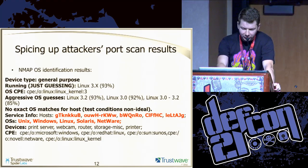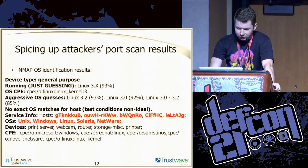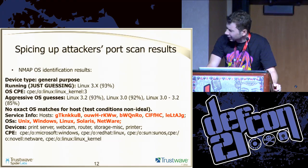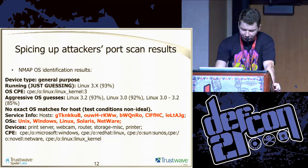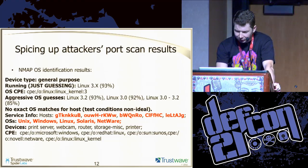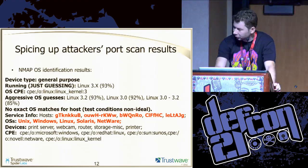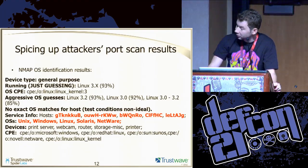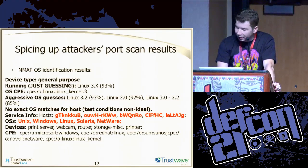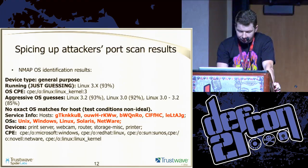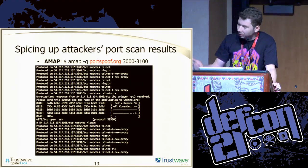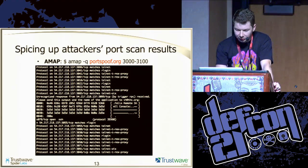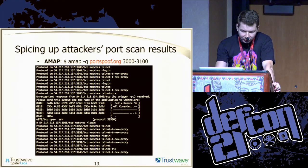Additionally — and this is actually the second part of the presentation — you can also control certain fields which can help you with exploitation of particular software. AMAP shows similar results: all of the ports are open and some of them are unidentified.